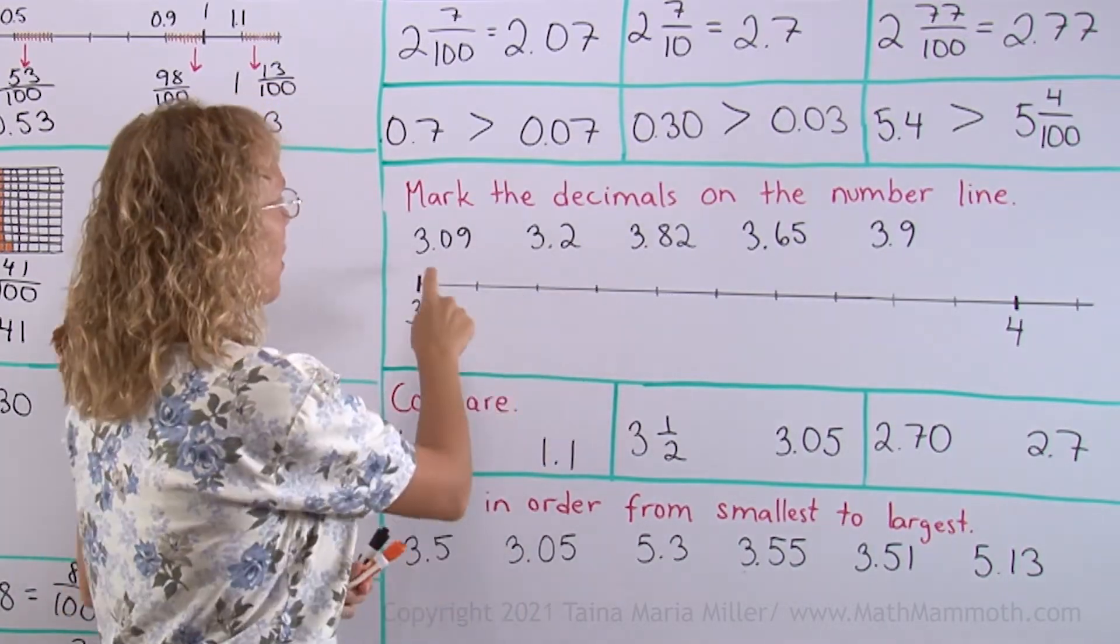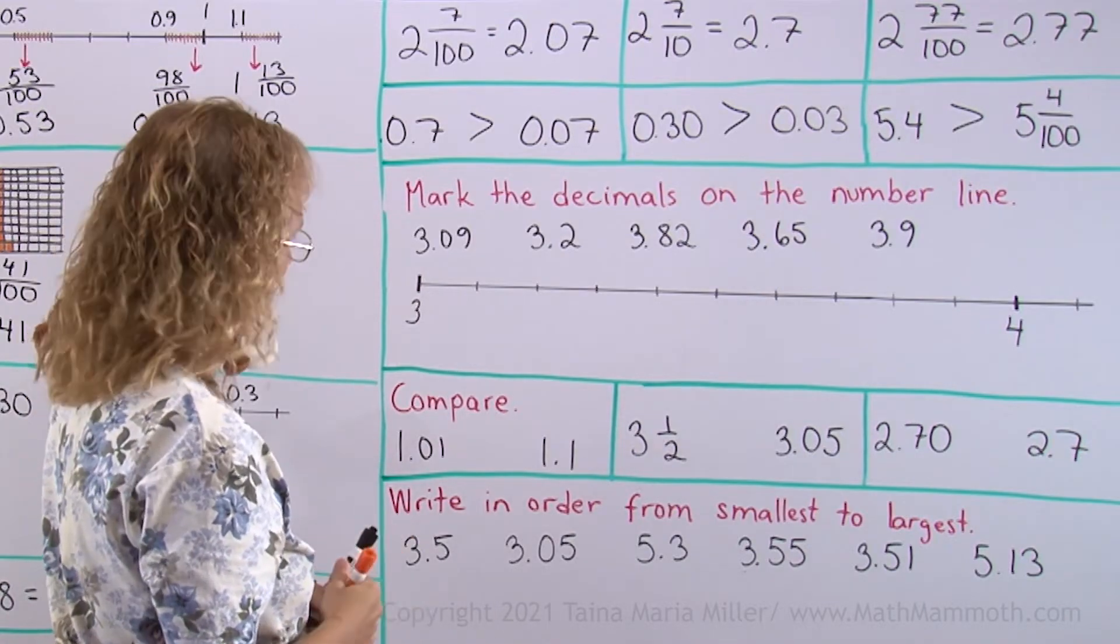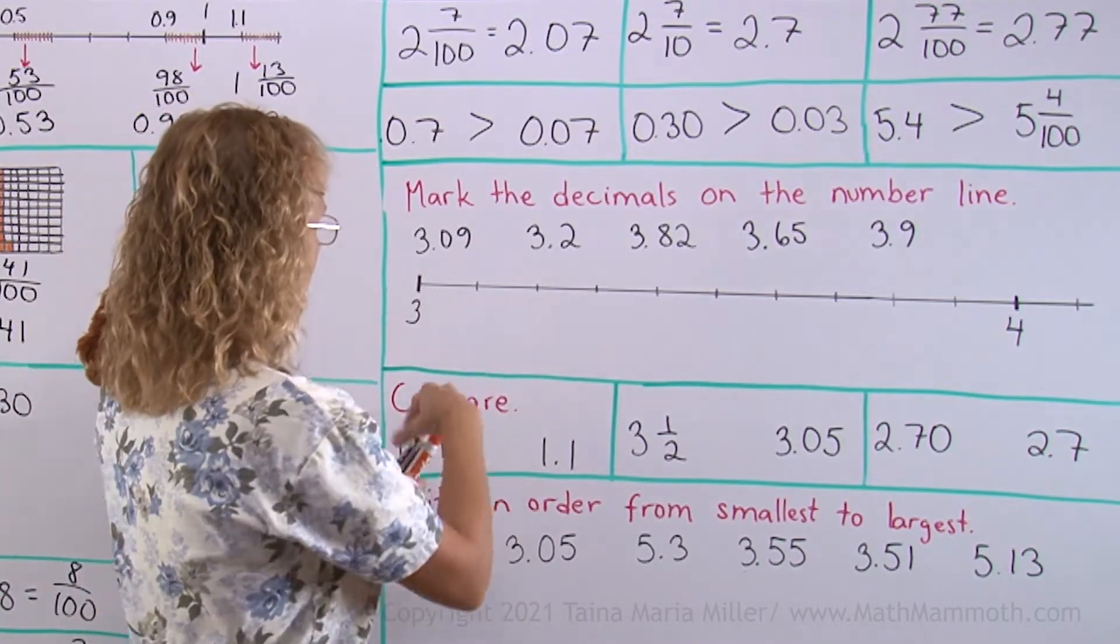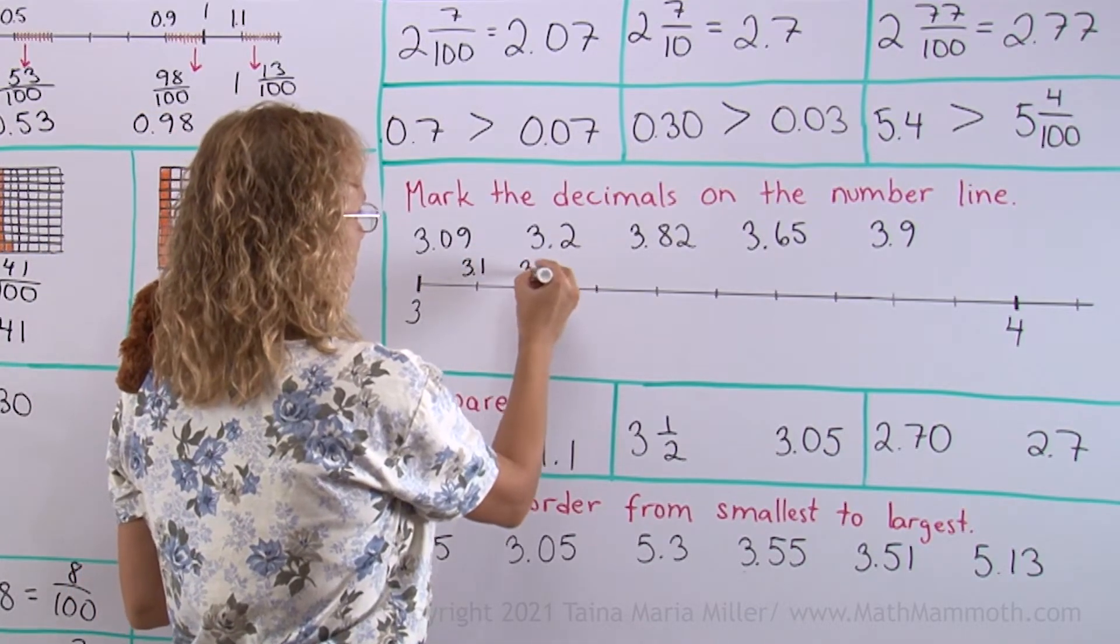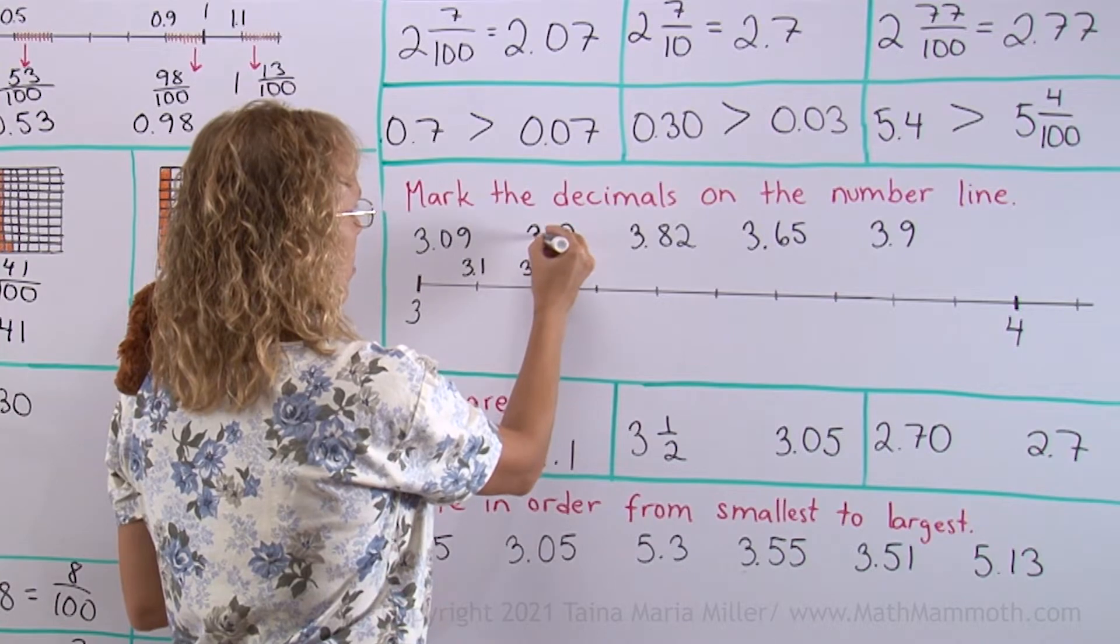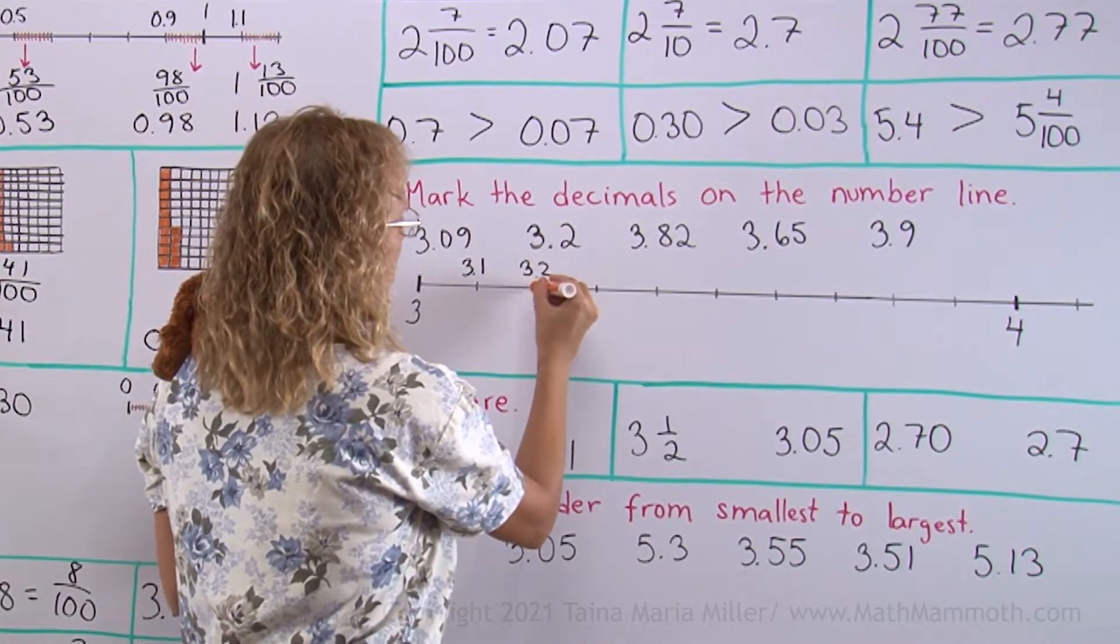Let's mark this on the number line. 3.09. Well, you see, the number line here is divided into tenths. So here I have 3.1. Here I have 3.2. Well, this is here 3.2. Easy to mark because it's right there. It's this one here. Okay.